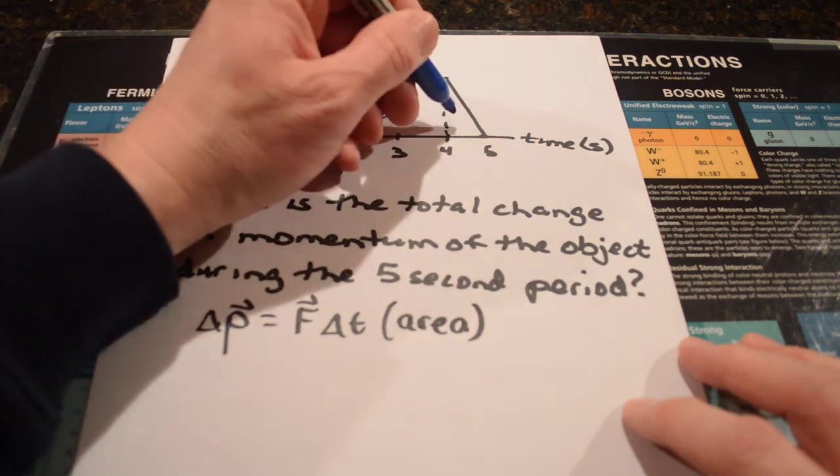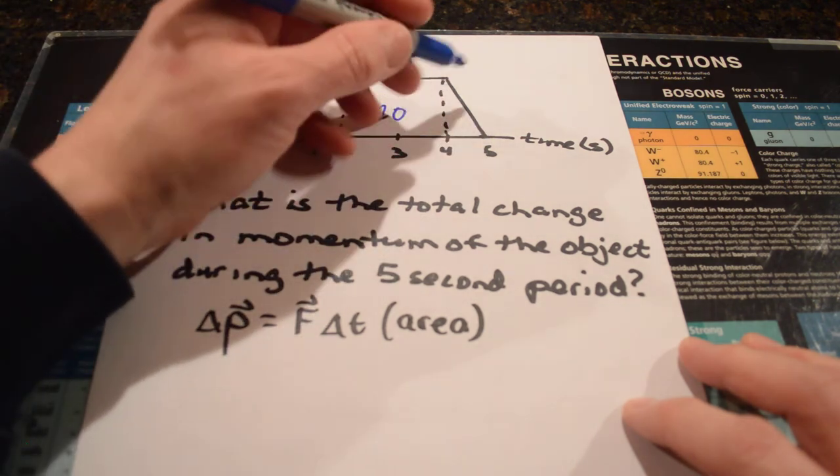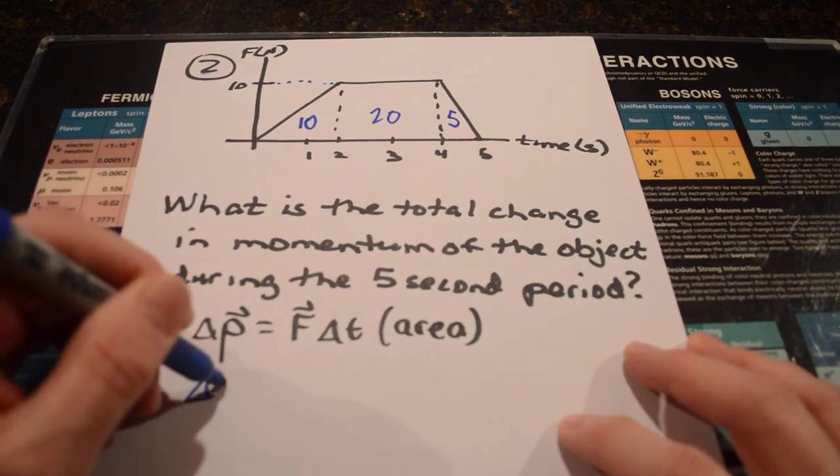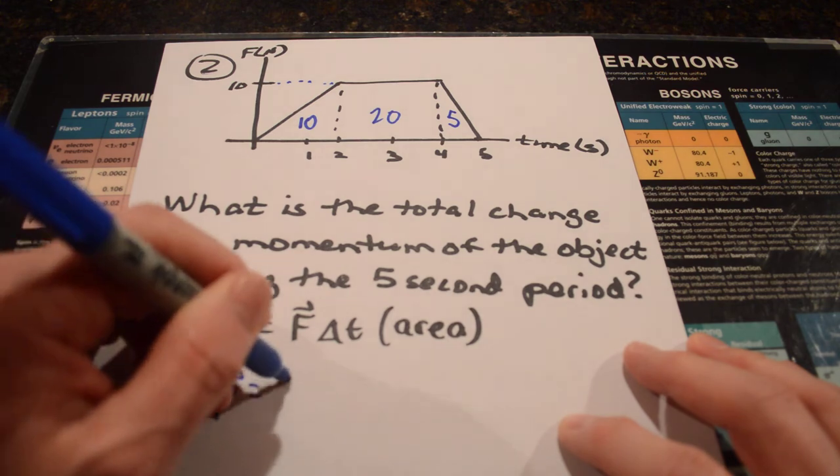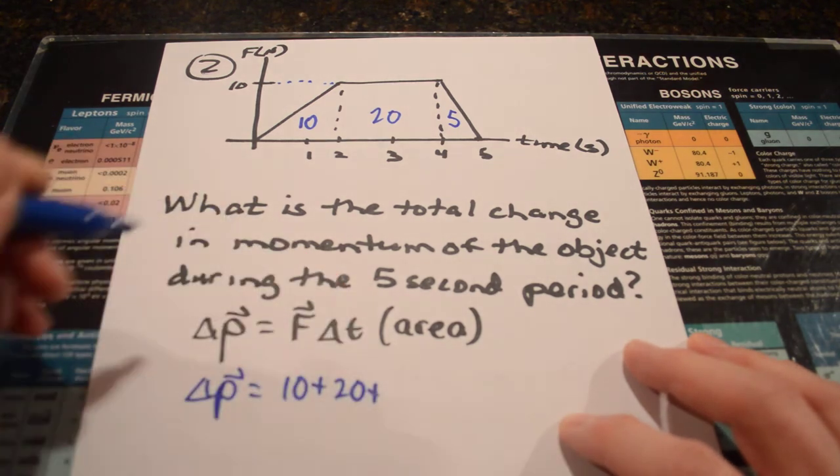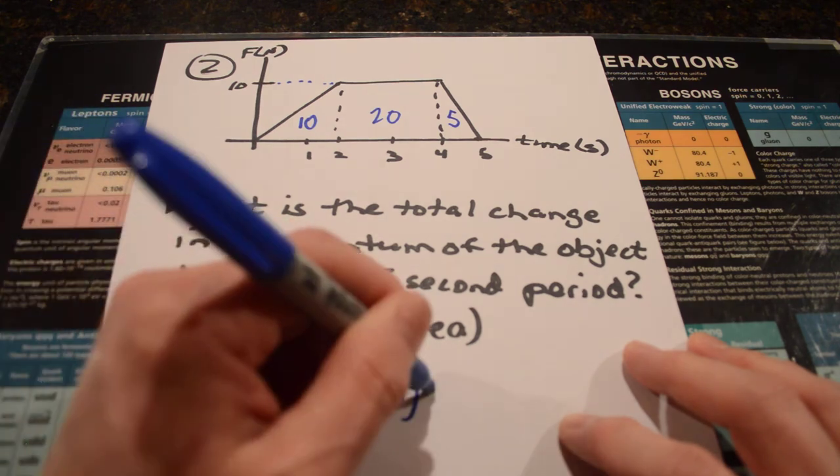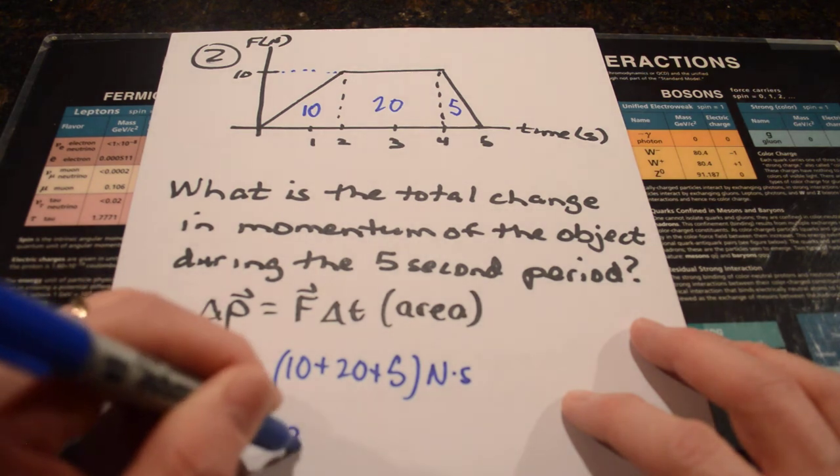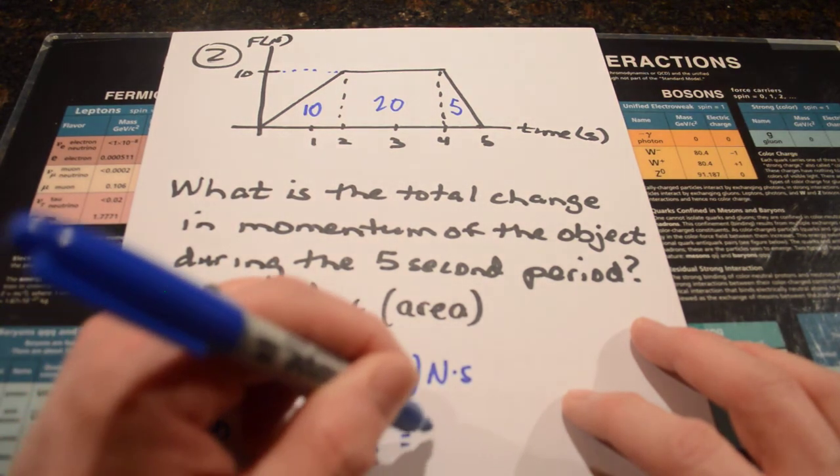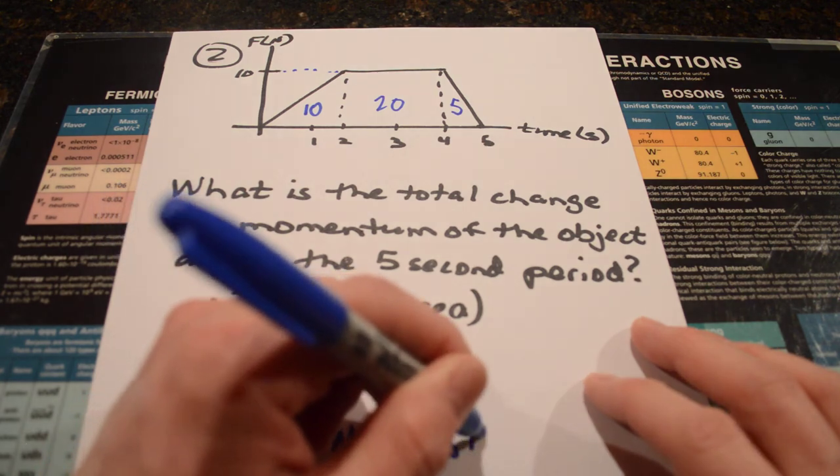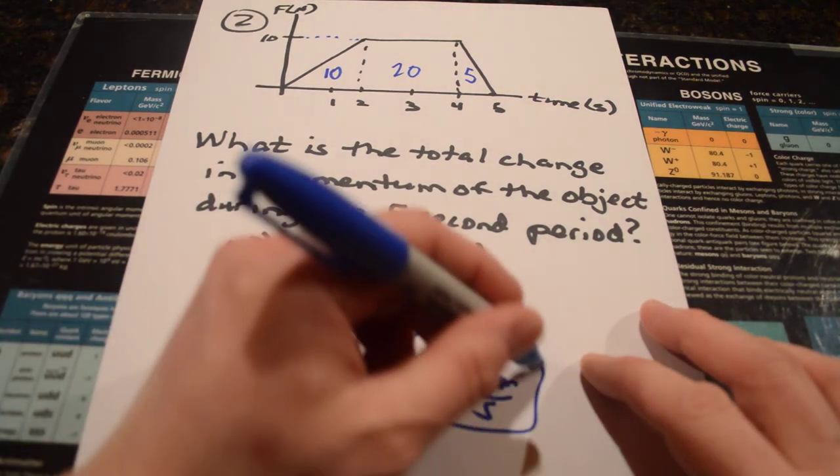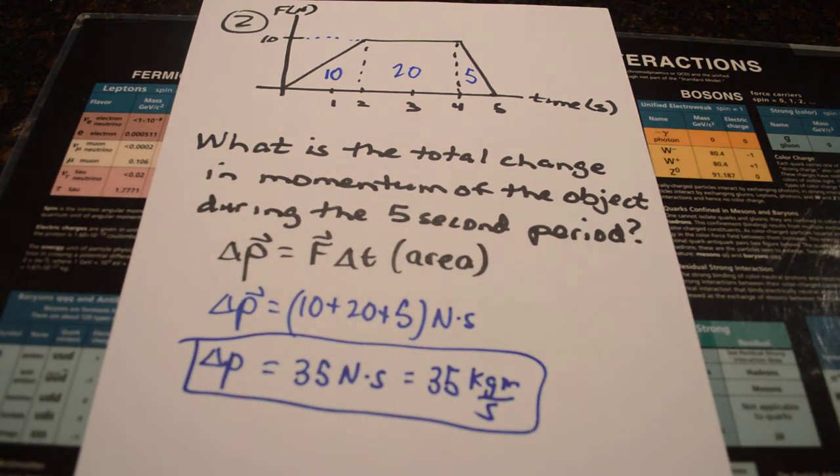So, it's ten times one. Take half of that, because it's a triangle, and that gives you five. So, the total momentum in this problem would be ten plus twenty plus five. And that would be the units of newton seconds. So, the total momentum would be thirty-five newton seconds. Or, if it feels better for you, thirty-five kilogram meters per second. So, that should be the answer to that problem. It is just by taking a look at the area under the curve.